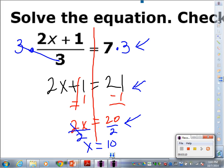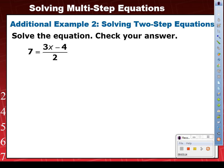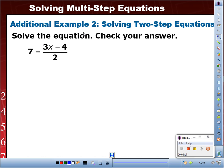Therefore, copy this next one. Do this next one by yourself. Example 2. Example 2 says solve the equation. 7 equals 3x minus 4 over 2. And right now we're going to skip the check just for the meantime. Do that by yourself. Go.